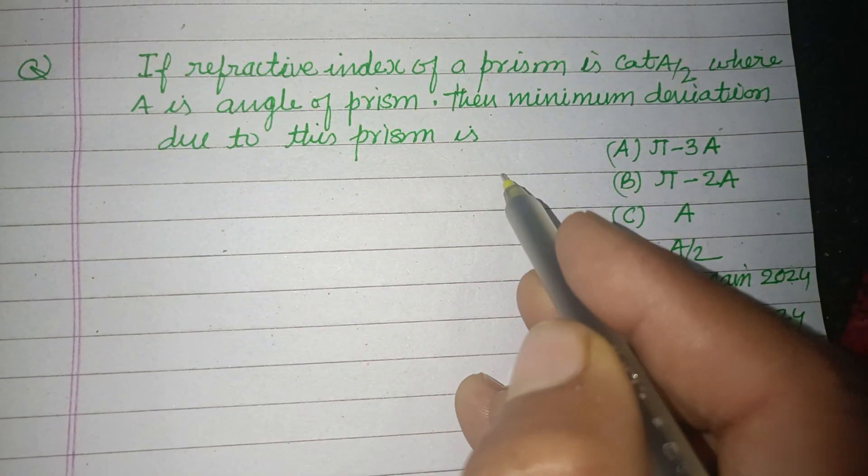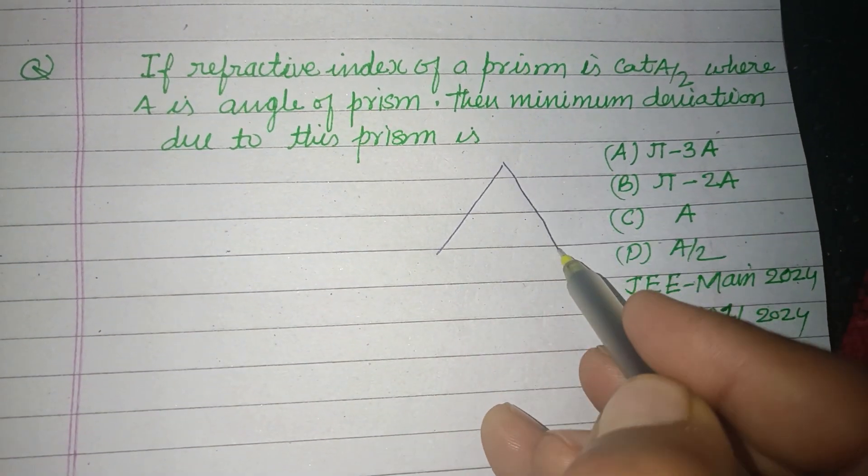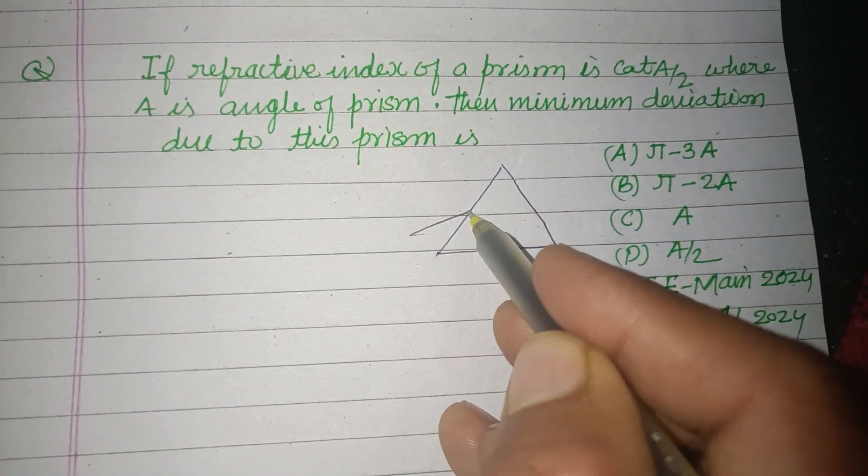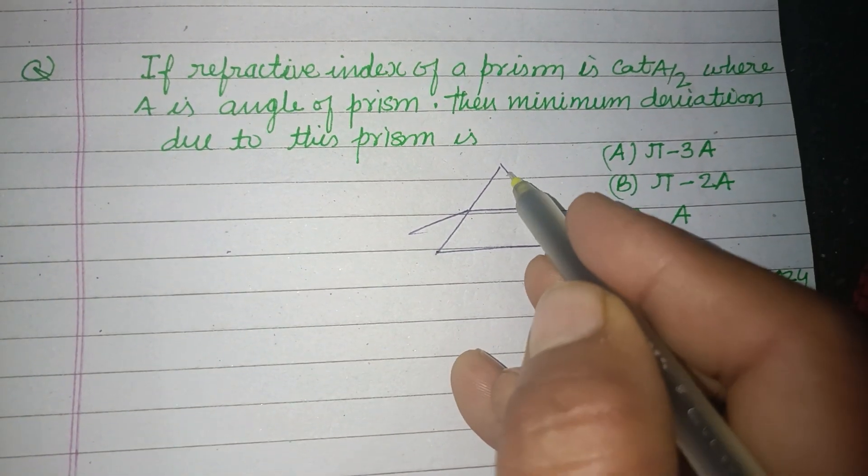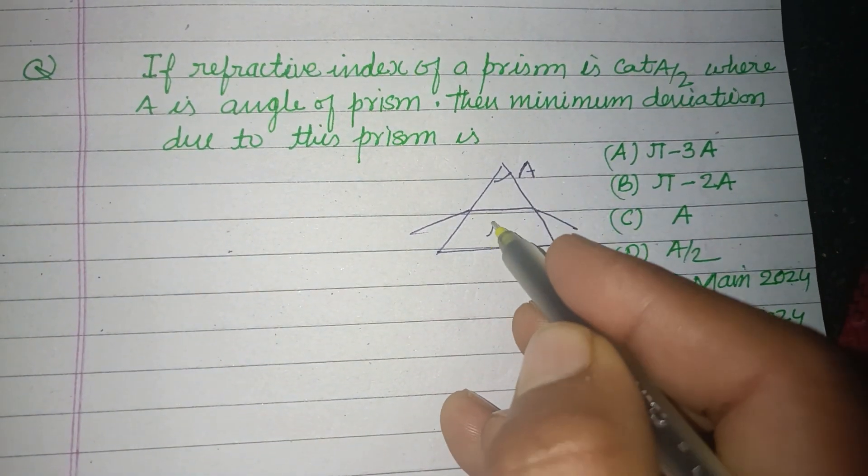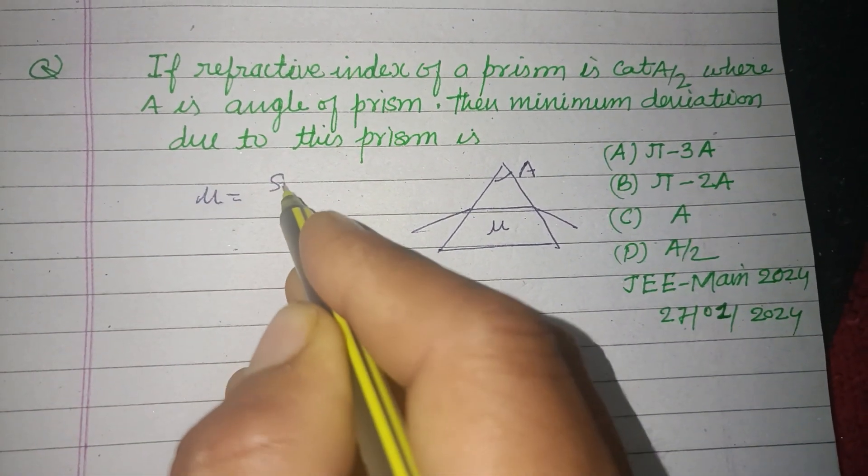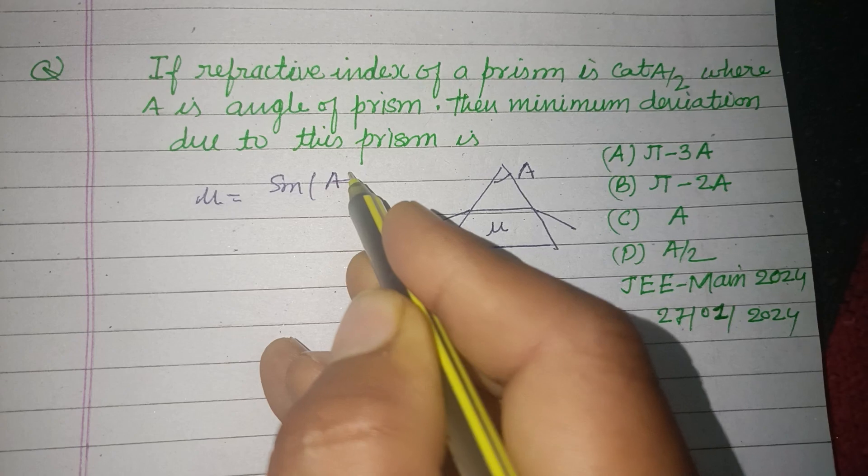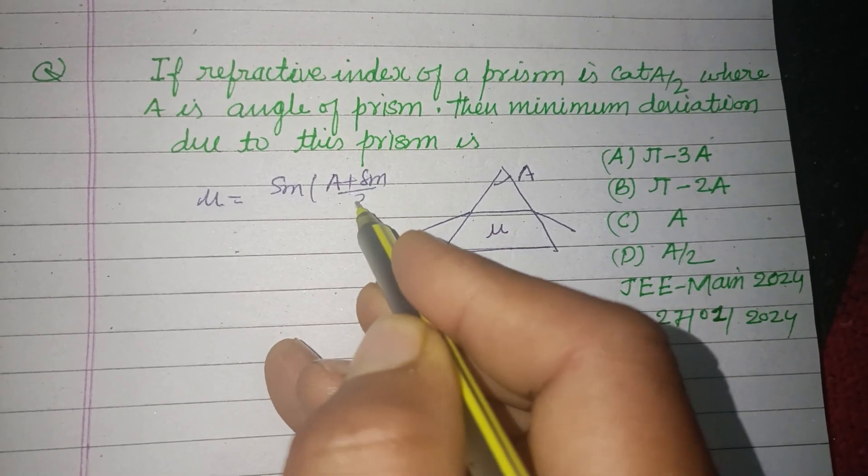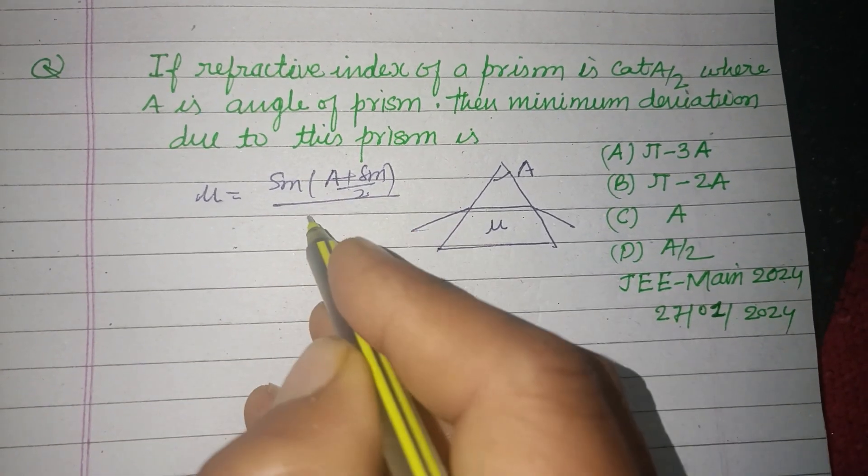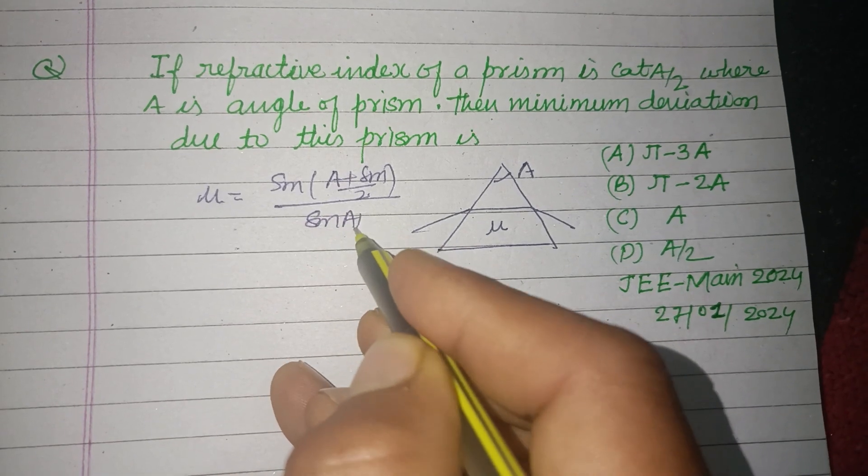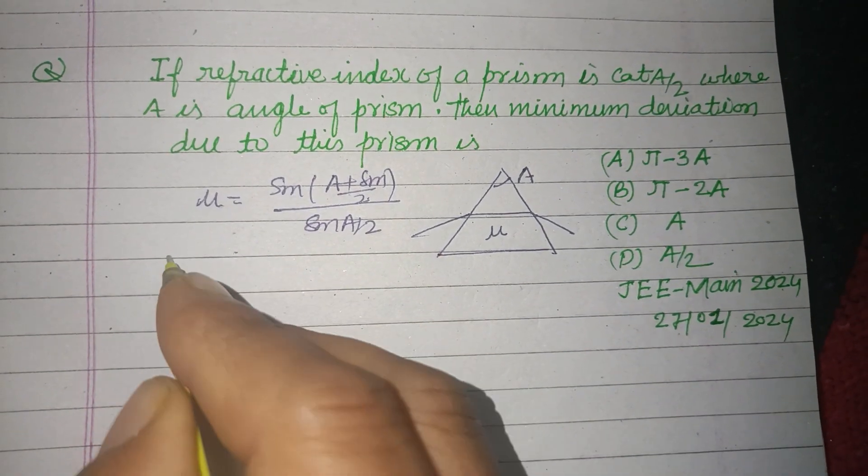So students, you know that this is a prism. Here is the angle of deviation. Using the refractive index of the prism, we have the formula: μ equals sin(A plus δm by 2) over sin(A by 2), where μ is...